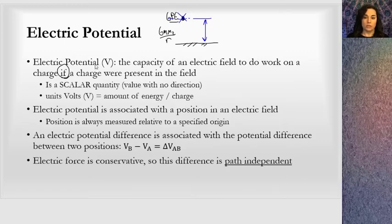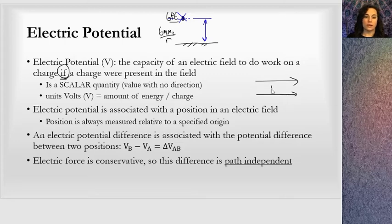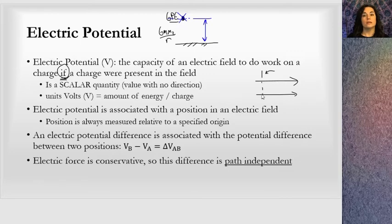The electric potential is the capacity of an electric field to do work on a charge if the charge were there. If I have some sort of electric field and I think about a location in that electric field, that location has a potential to do work on a charge. There's no charge in there yet, but the electric field exists and it has a potential to do work.